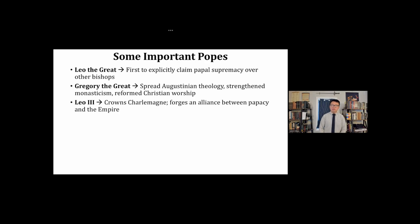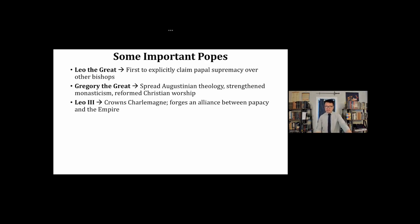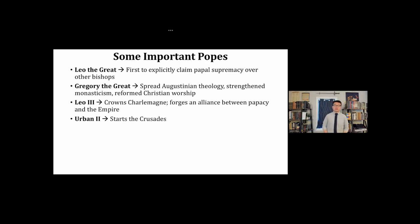Leo III is a prominent pope who crowns Charlemagne in 800 AD, and he's important because he helps forge an alliance between the papacy and the empire — some refer to the Carolingian Empire as itself the Holy Roman Empire. After Leo III, we have Urban II almost 300 years later, who starts the Crusades. In 1095 at the Council of Claremont, Urban II encouraged all of the Western Church to consider going on a crusade to protect the Eastern Roman Empire, to protect Constantinople, and to reclaim the Holy Land.